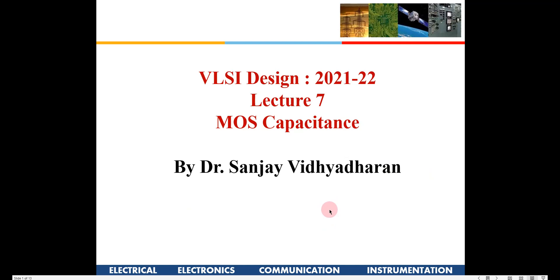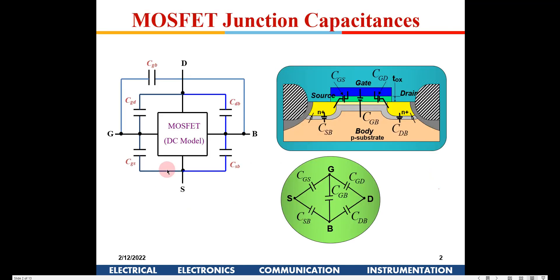If you see a MOSFET, until now we considered only the DC model, but there will be some parasitic capacitances associated with all four terminals — gate, drain, source, and body. You will have CGD between the gate and the drain, CGS between the gate and the source, CGB between the gate and the body, and also capacitances between drain and body, and source and body.